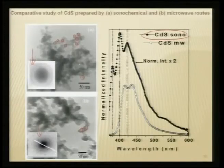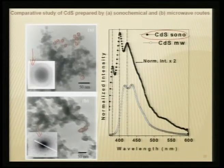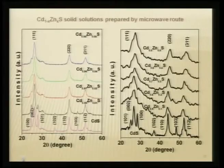Once particles are less than 10 nanometers, they are blue-shifted. You can see the blue shift for sonochemically prepared cadmium sulphide compared to the microwave-prepared cadmium sulphide particle, demonstrating how preparative route controls the optical properties.